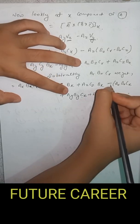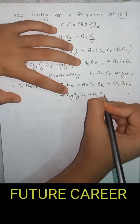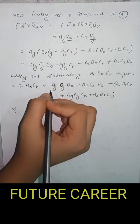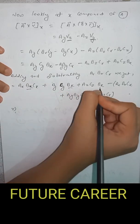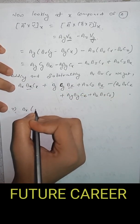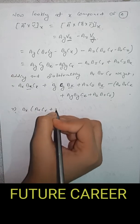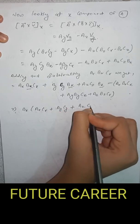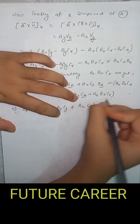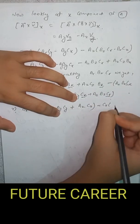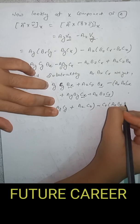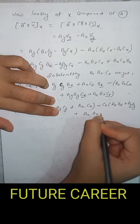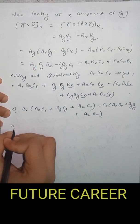Taking Bx common from the positive terms: Bx into Ax Cx plus Ay Cy plus Az Cz. Then taking Cx common from the remaining terms: minus Cx into Ax Bx plus Ay By plus Az Bz.